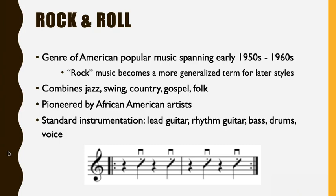So what exactly is rock and roll? This genre spans from about 1950 to the early 1960s — about a decade — before we start to see shifts when rock and roll comes from Europe, like the Beatles and the British Invasion, and after that we just call it rock. Rock and roll is a combination of jazz, swing, ragtime, country, gospel — all styles from early 20th century American music — pioneered by African American artists. Standard instrumentation includes a lead guitar, backup guitar, bass, drum kit, and lead singer.